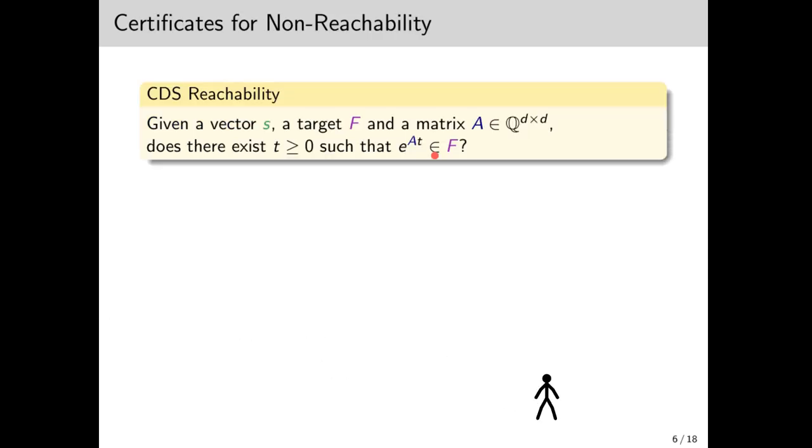Now, suppose we know, somehow, that e to the at hits f for some t. Then this t can serve as a certificate for reachability. Well, it's not quite that simple since t might be transcendental, but it's close enough. What we want in this work is to find a certificate for non-reachability. Clearly, we can't hope to always find a certificate, or the problem would become decidable. But let's see what we can do.